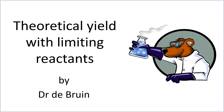Calculating theoretical yield is one of the trickiest calculations you encounter in GCSE chemistry. But one way the exam board can make it even harder is by giving you one of the reactants in excess, one as a limiting reactant, and expecting you to work out before you start which one is which.